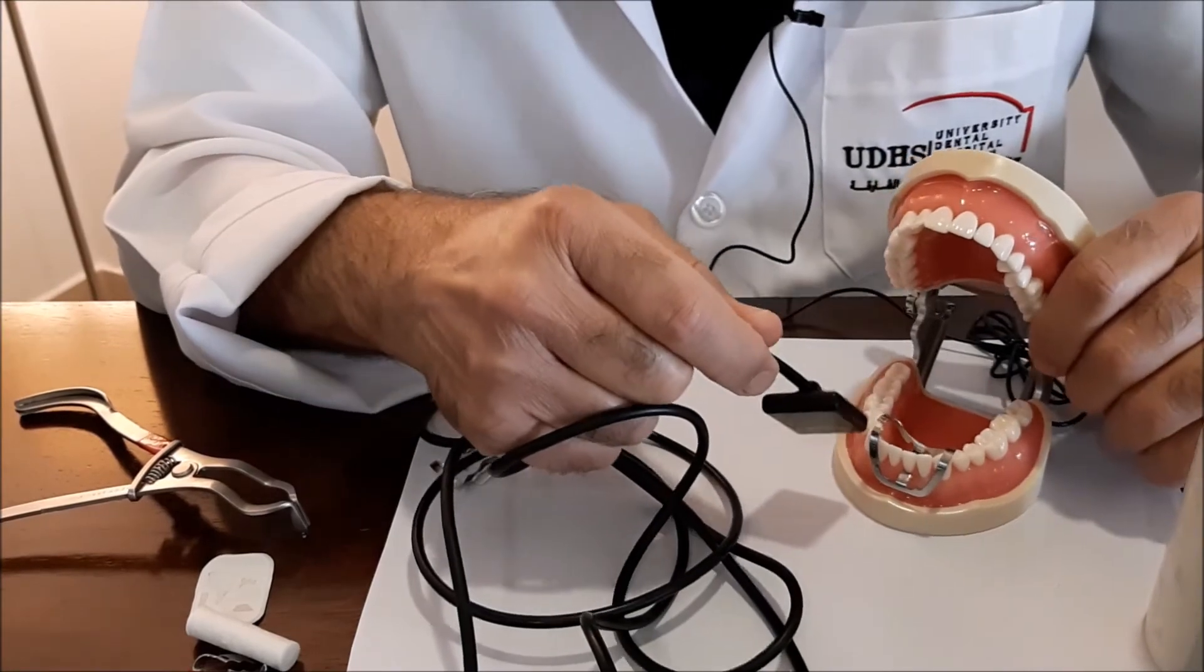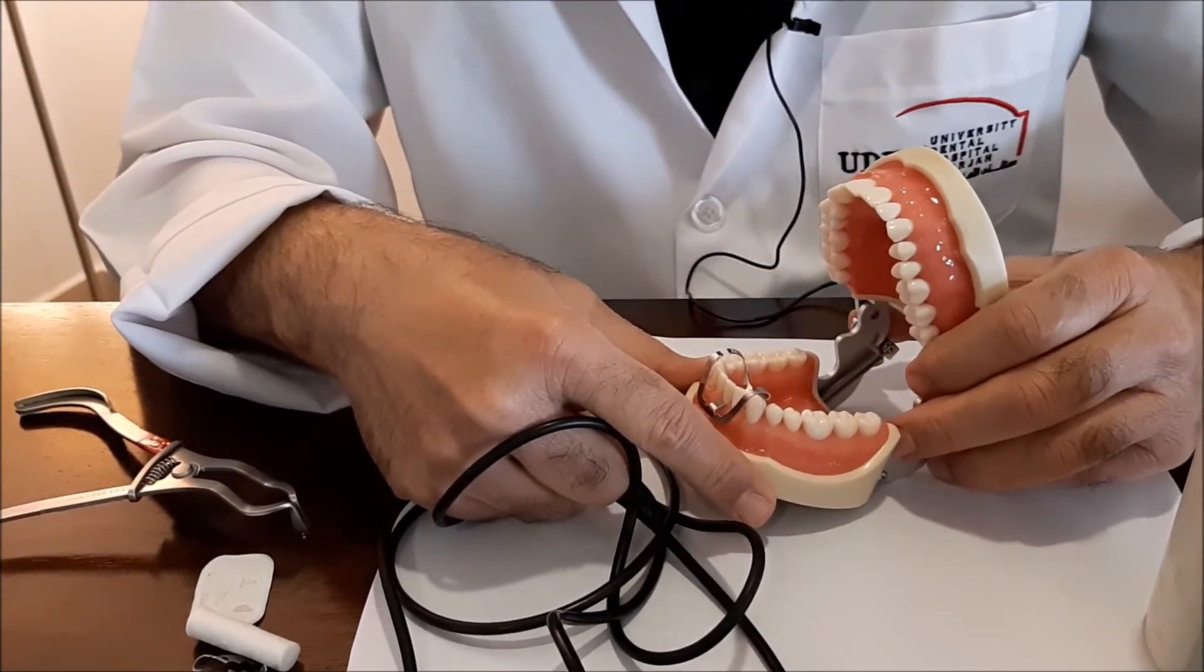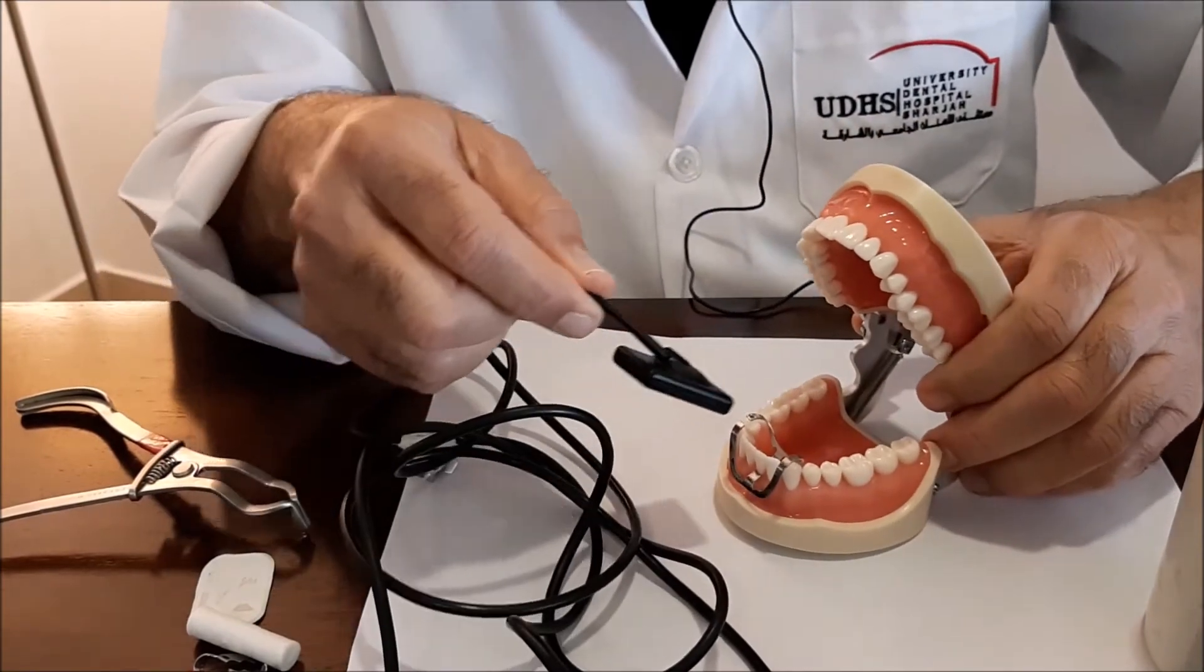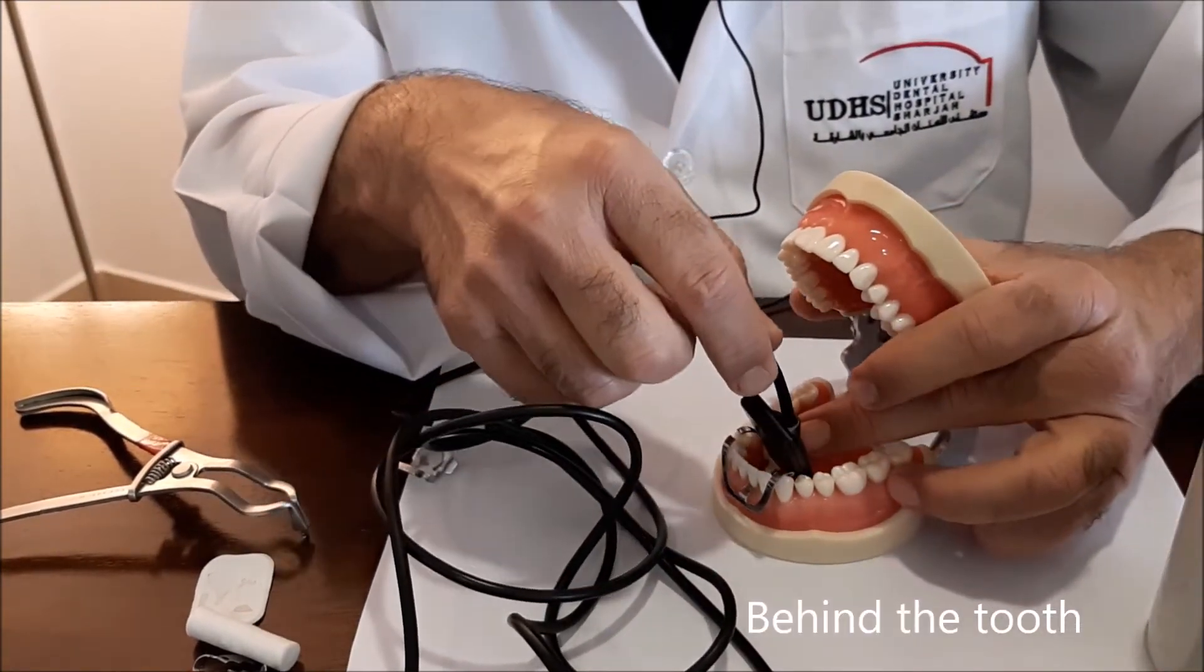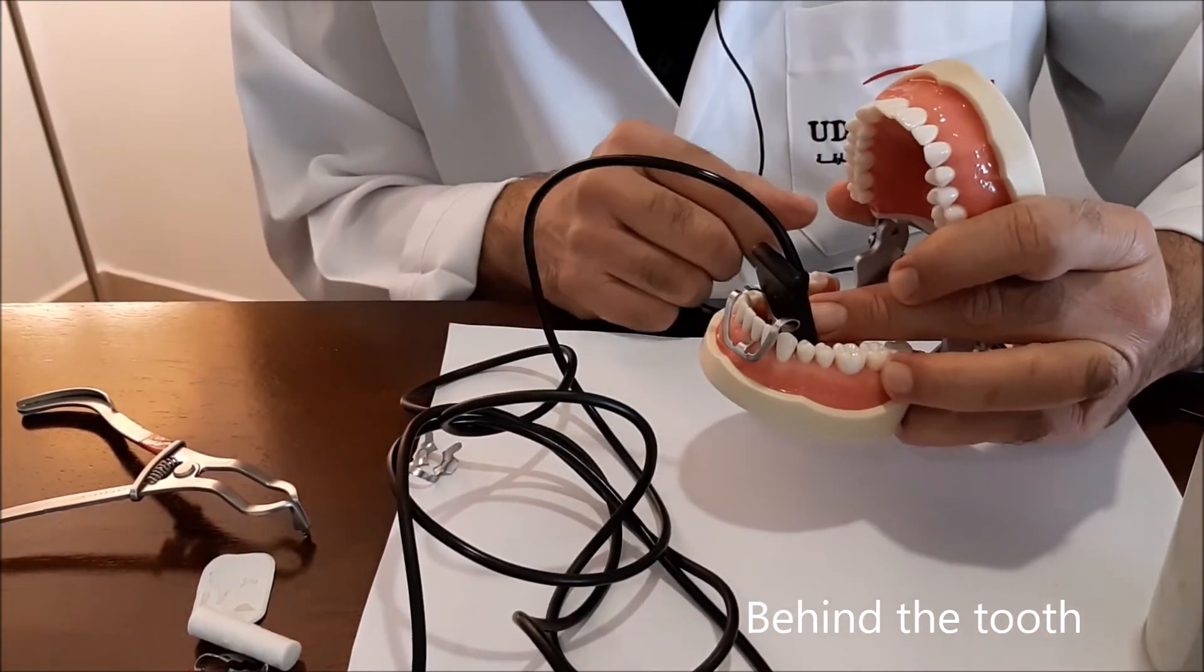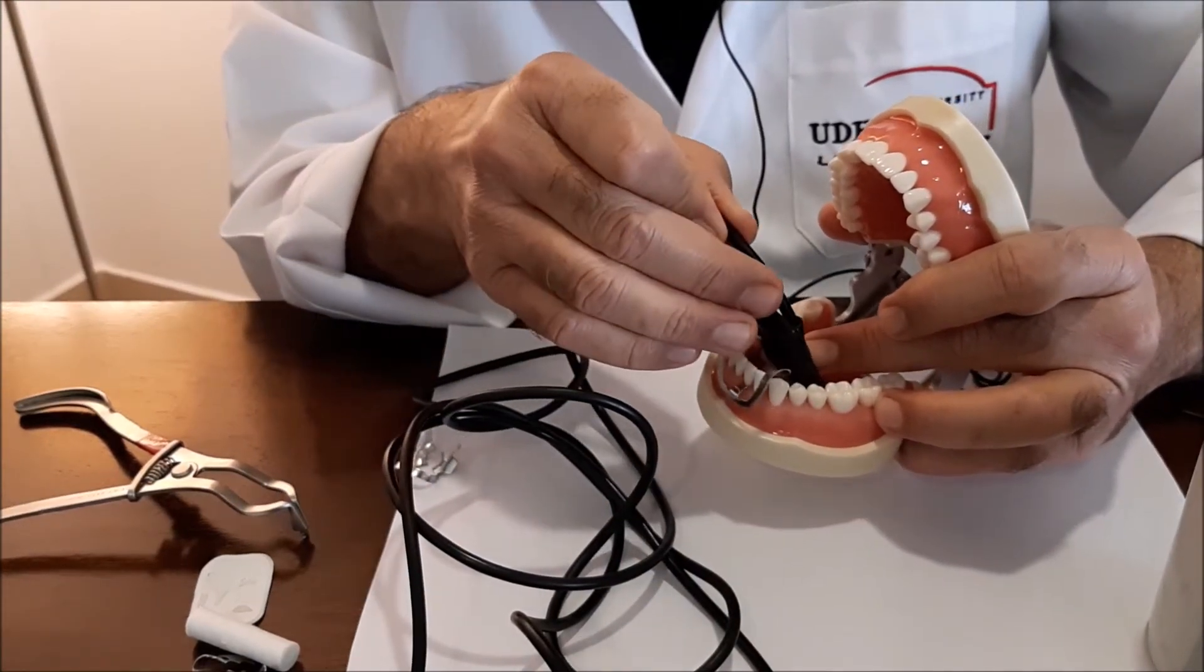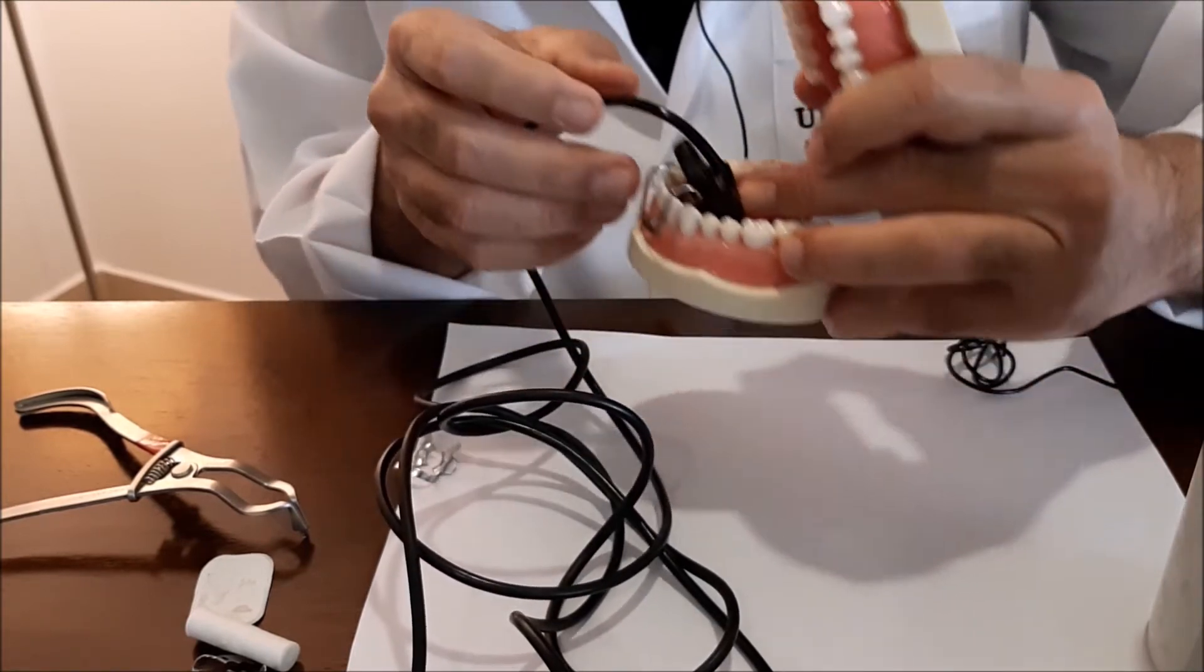When we do a radiograph for the lower central incisors and the lateral incisors, depending on which tooth you're doing, the sensor is placed just like in the canine, it is placed behind the film. But the problem here is it's extending too much above, so you will never catch up the apex here. Just like we did in the canines, push the sensor backwards, give it an inclination this way. See...